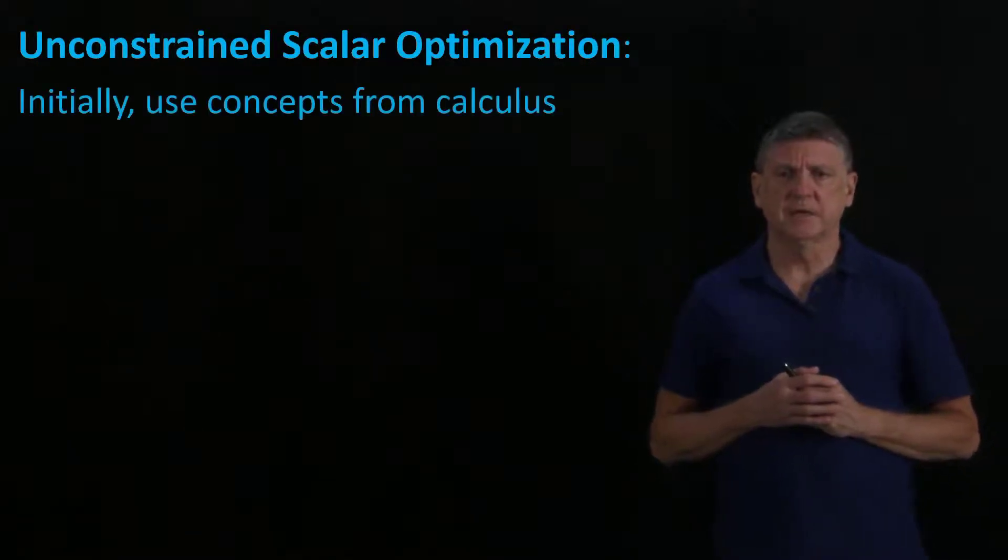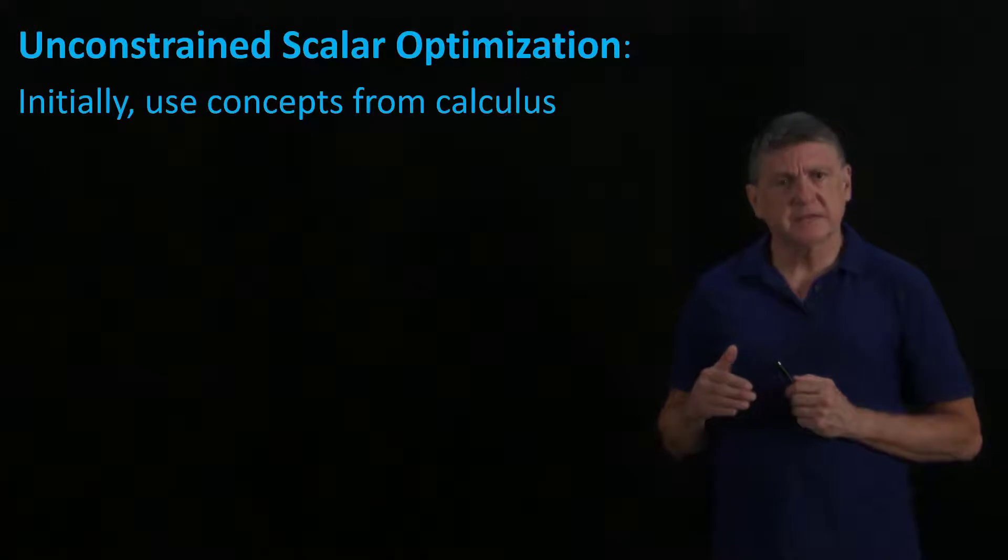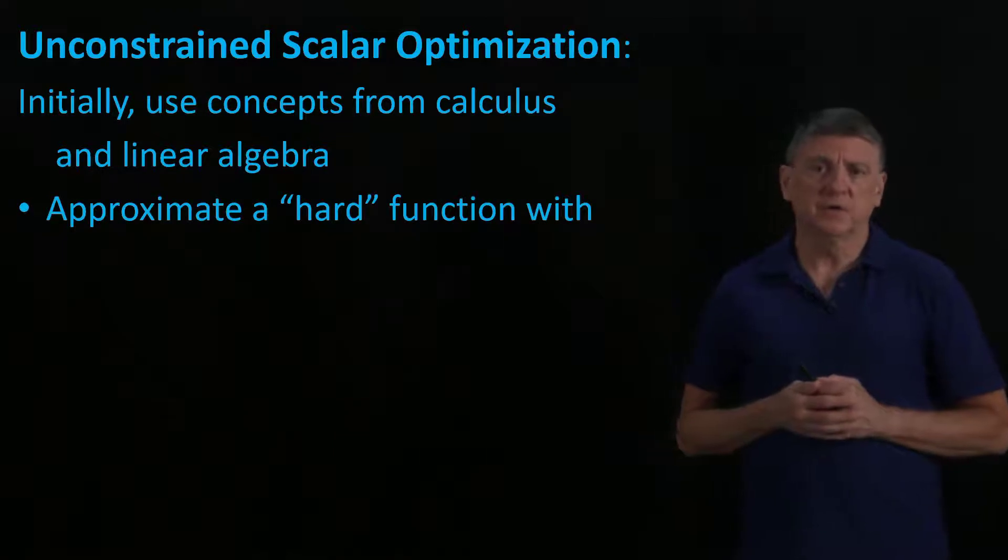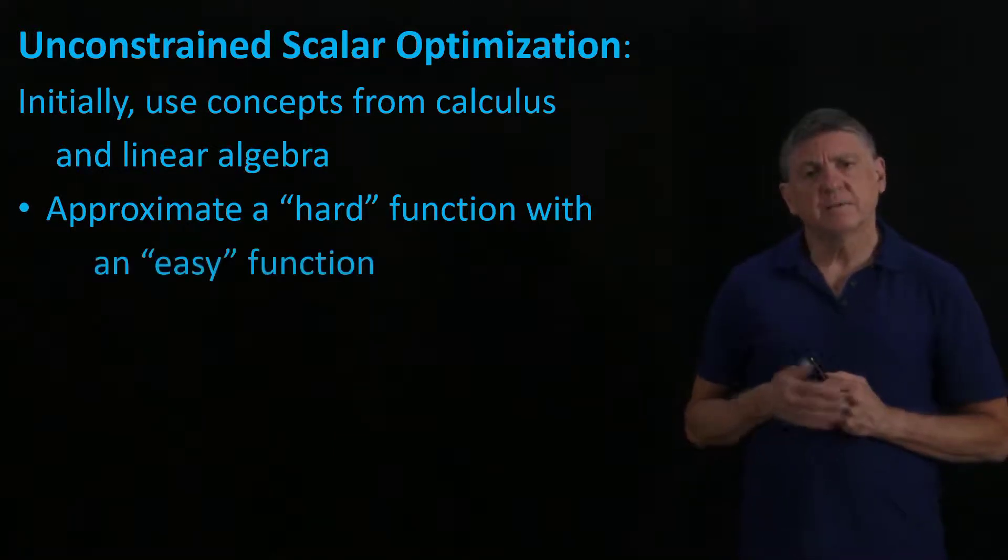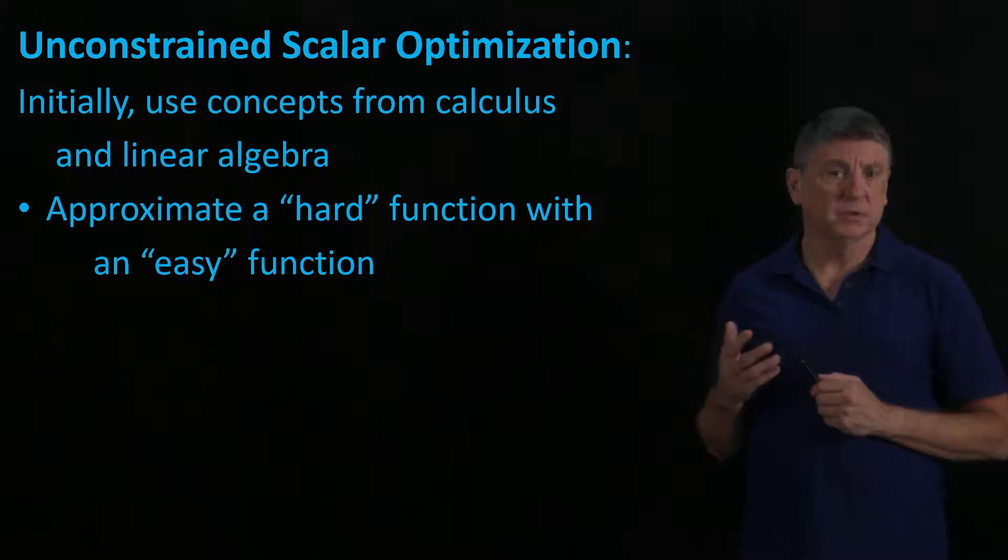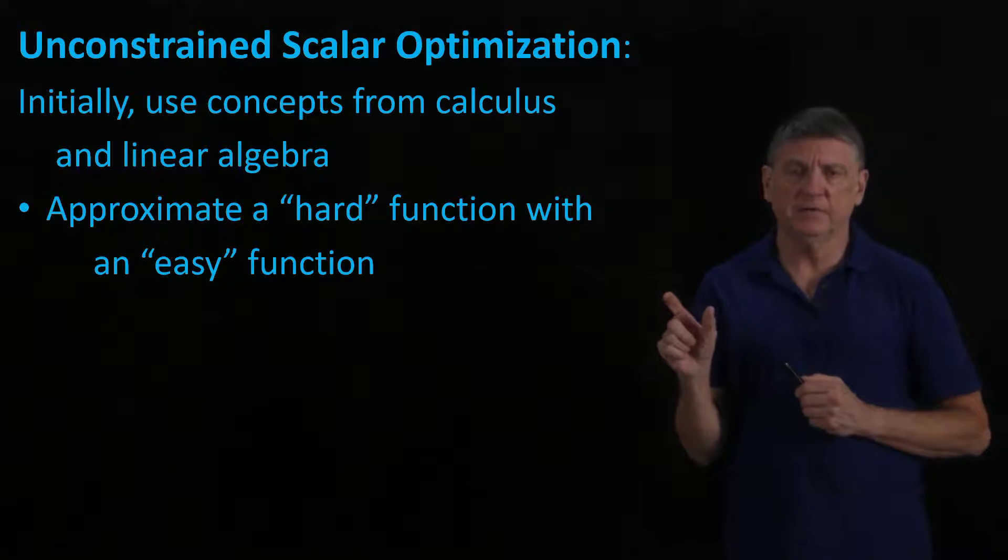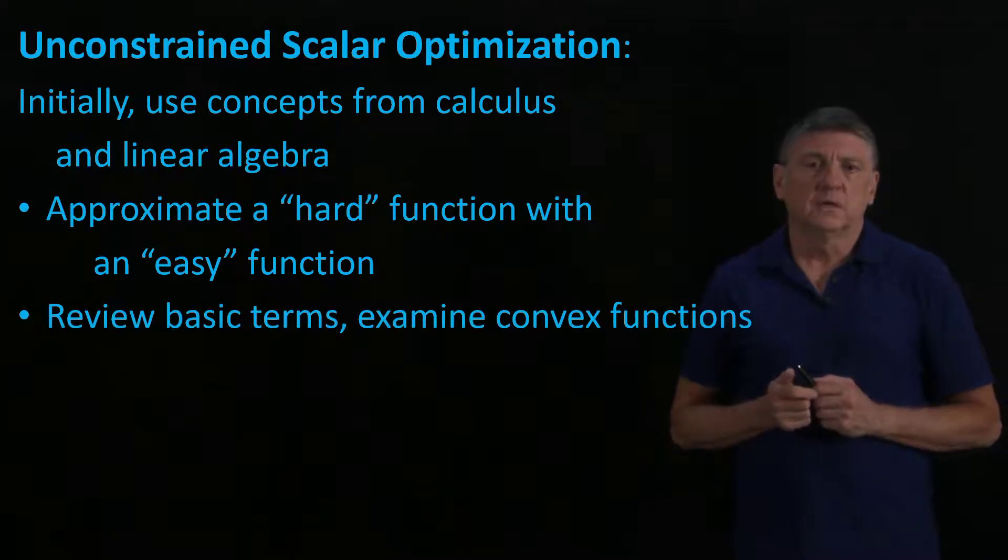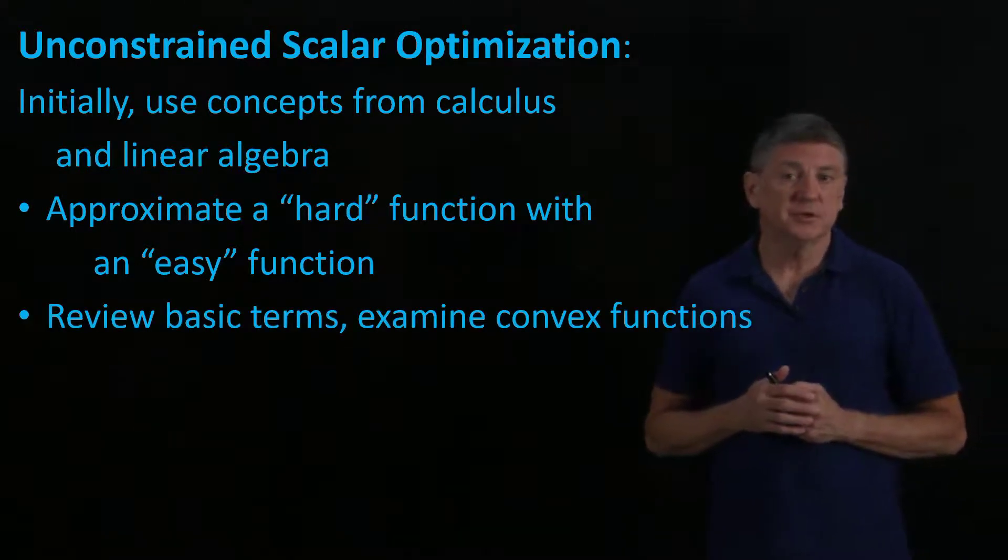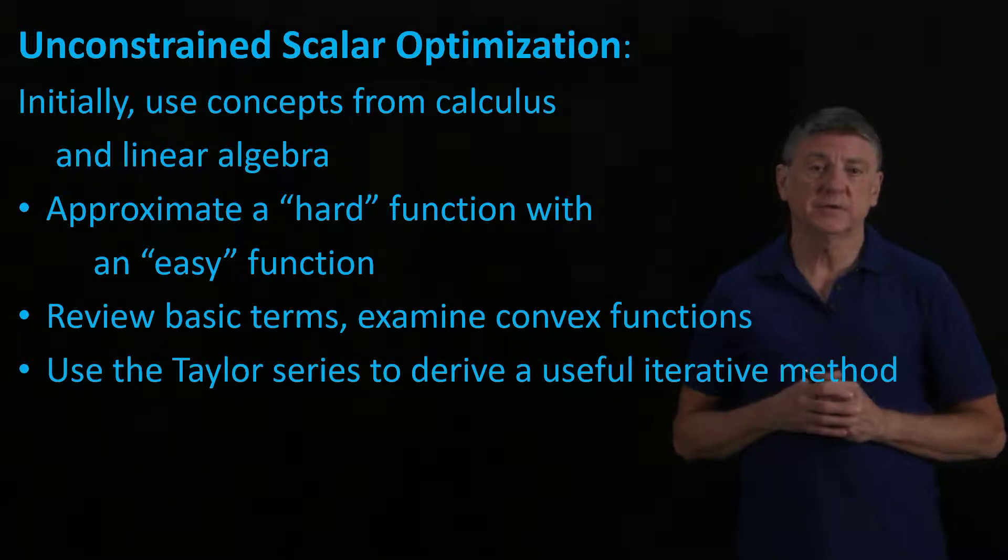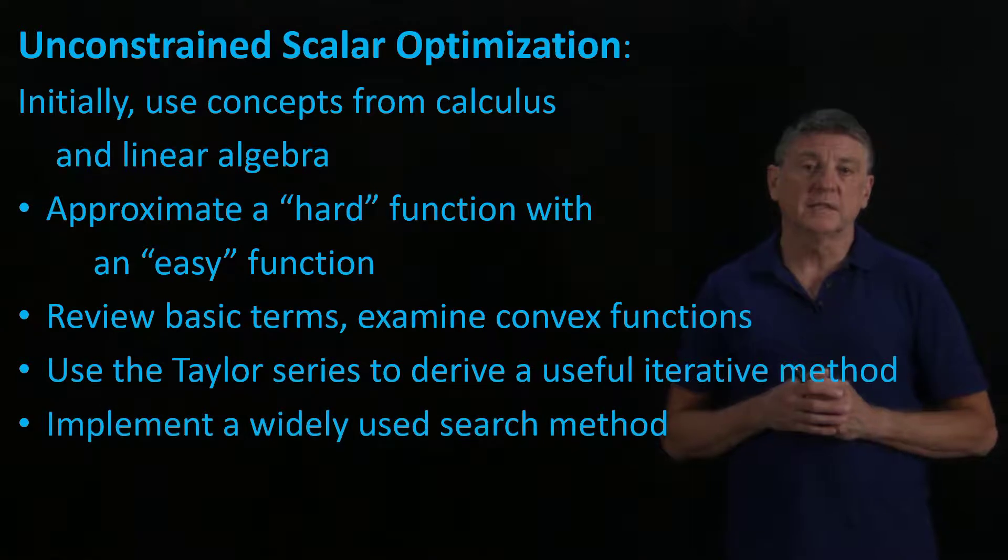Unconstrained scalar optimization is an extension of what you should know from prerequisite courses in calculus. We'll also add some linear algebra. The fundamental idea is if we have a hard function, one that's difficult, we'll approximate that in an area of interest with an easier function. This will require us to review some basic terms, and in particular we're going to look at what it means for a function to be convex. We're going to use the Taylor series quite often in this course, and we'll start with it in scalar land. This will let us implement a very widely used search method called line search.